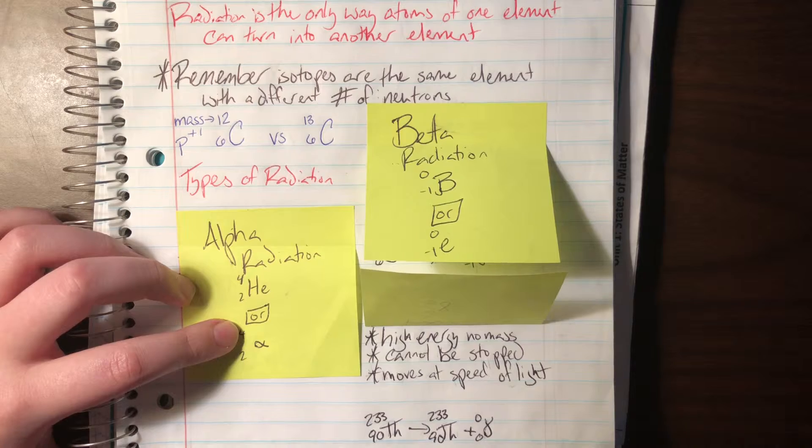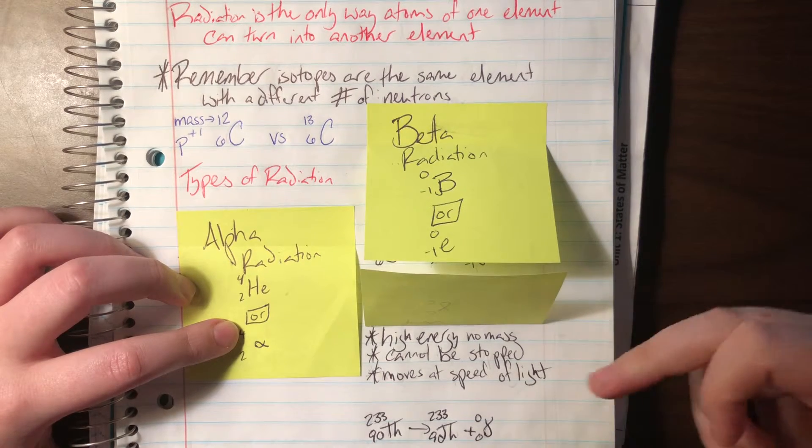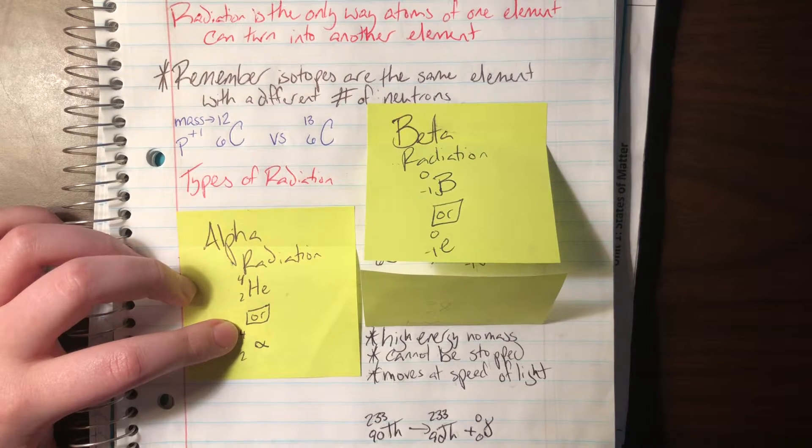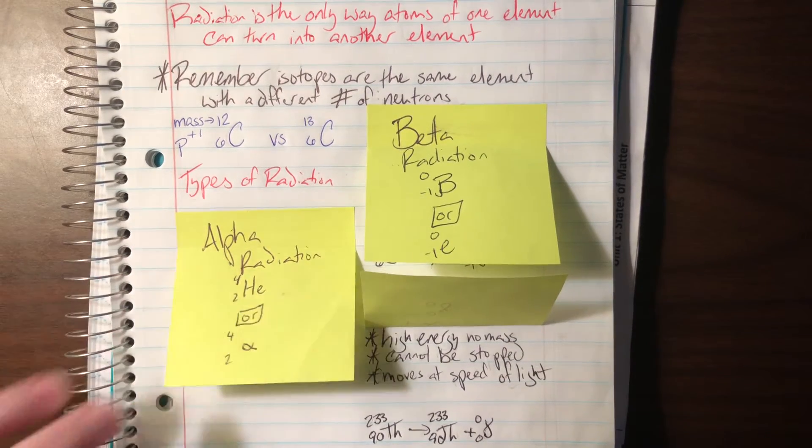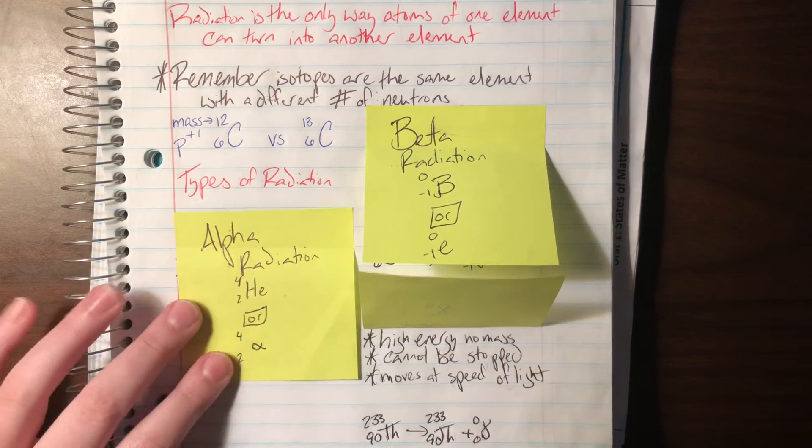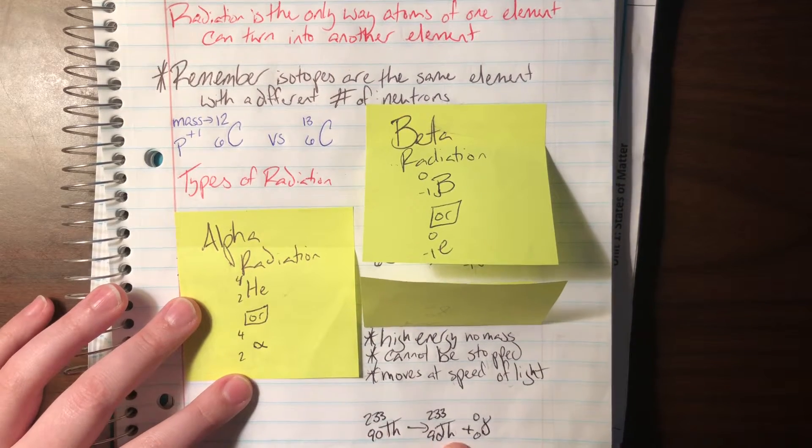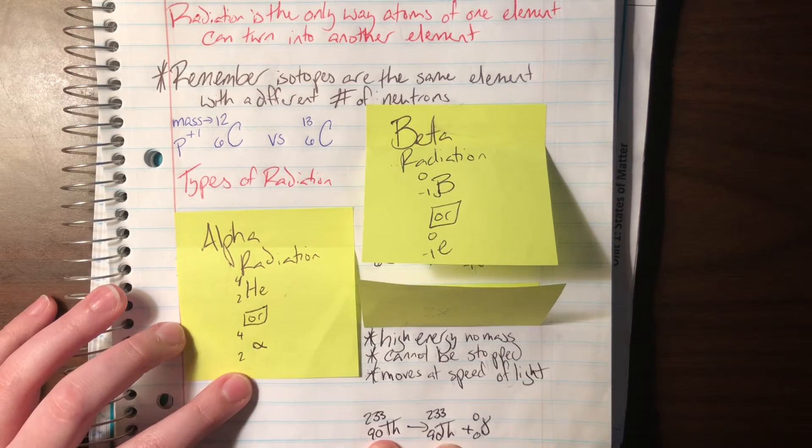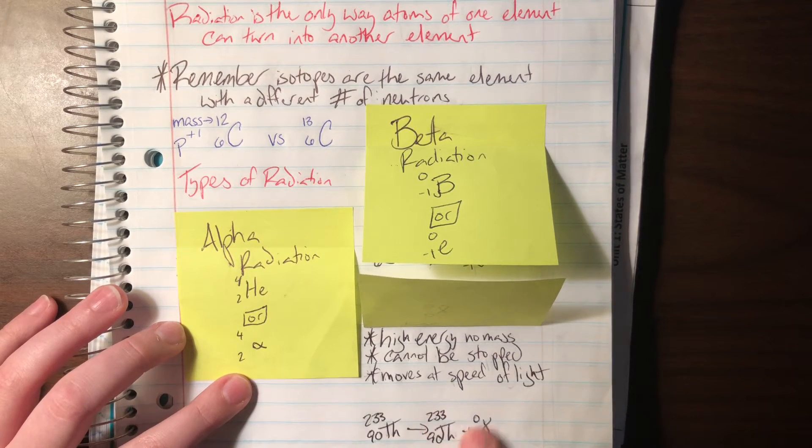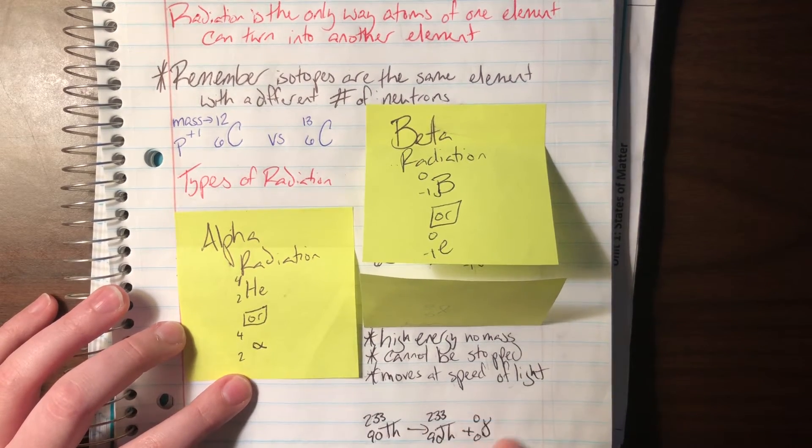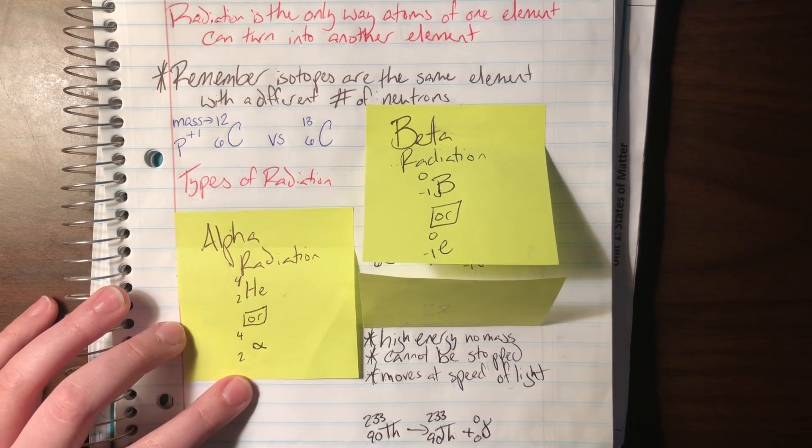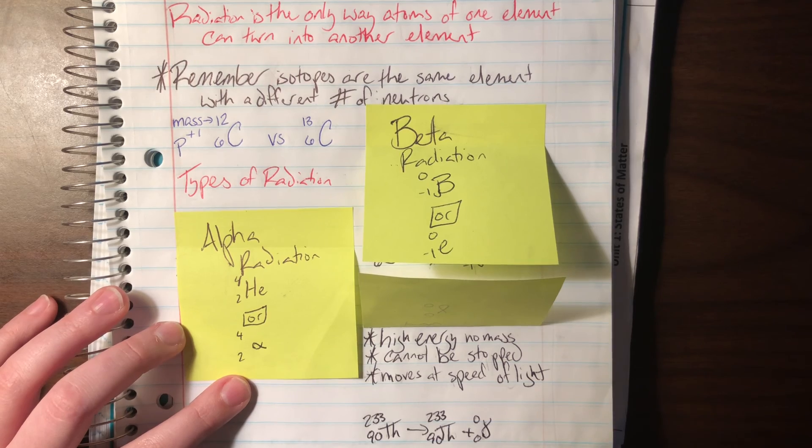And so here we have some gamma being emitted. This is basically just pure energy. The atom is too excited, so we have some pure energy being emitted, but it does not change anything about my thorium that I have here. My numbers are still the same. Normally gamma radiation is going to be emitted with something else, but it is basically just a pure burst of energy being given off.